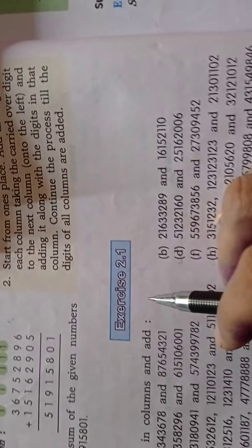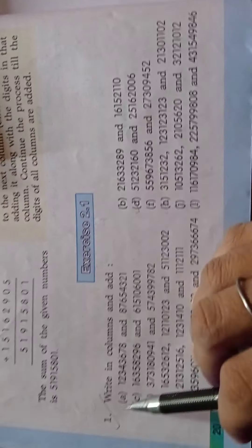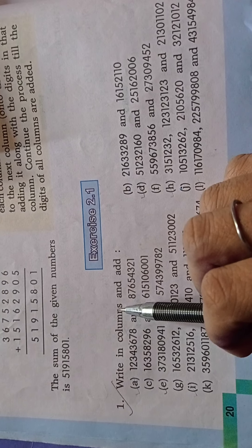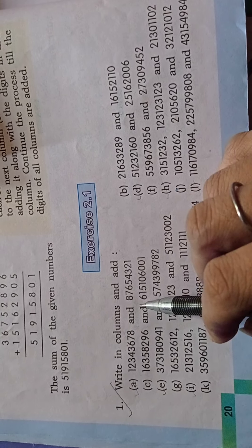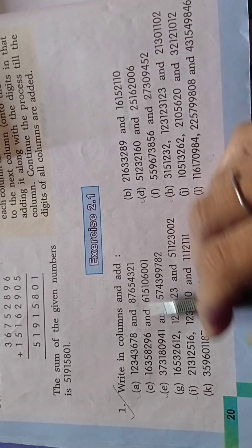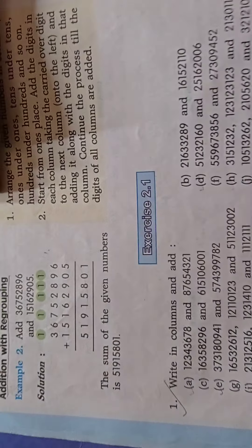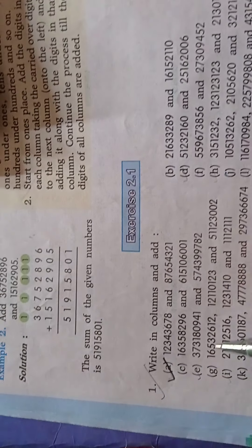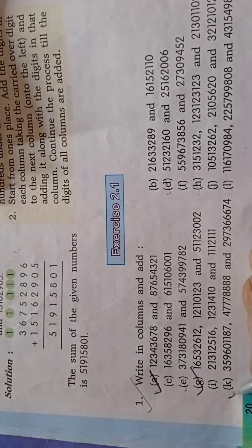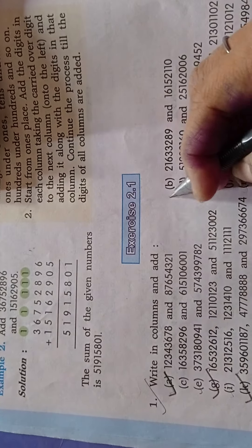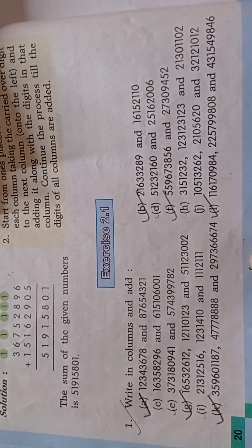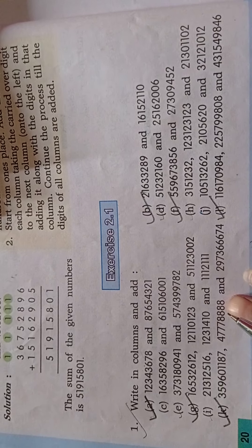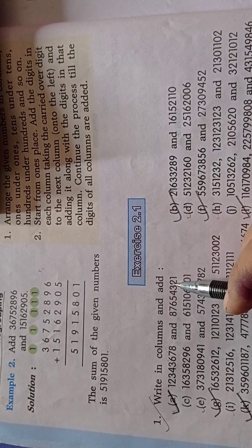तो यह आपके properties हैं addition के और subtraction के — इनको अच्छे से read करना है। Exercise 2.1, question number 1: write in columns and add — इनको columns में लिखना है और add करना है। जो questions tick कर दिए हैं वो-वो questions आप अपनी book में note-down करेंगे।